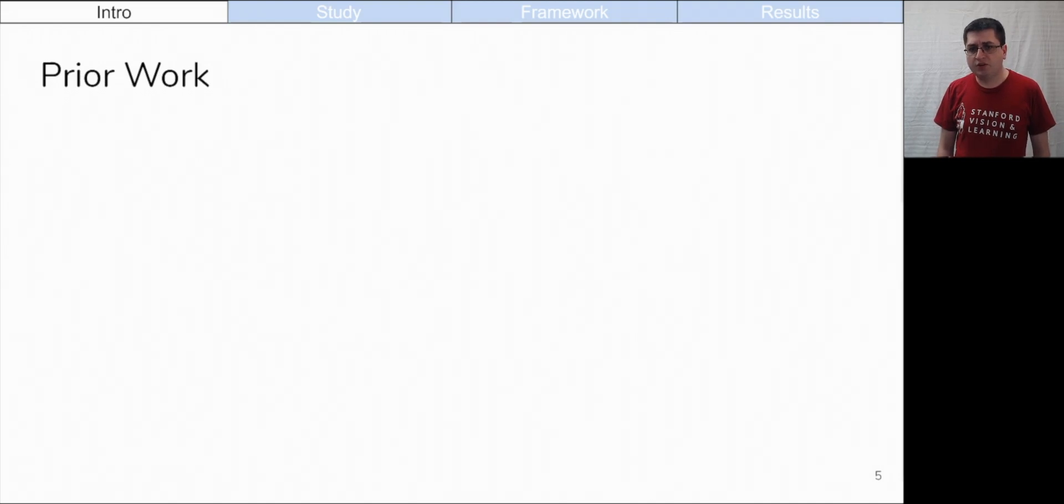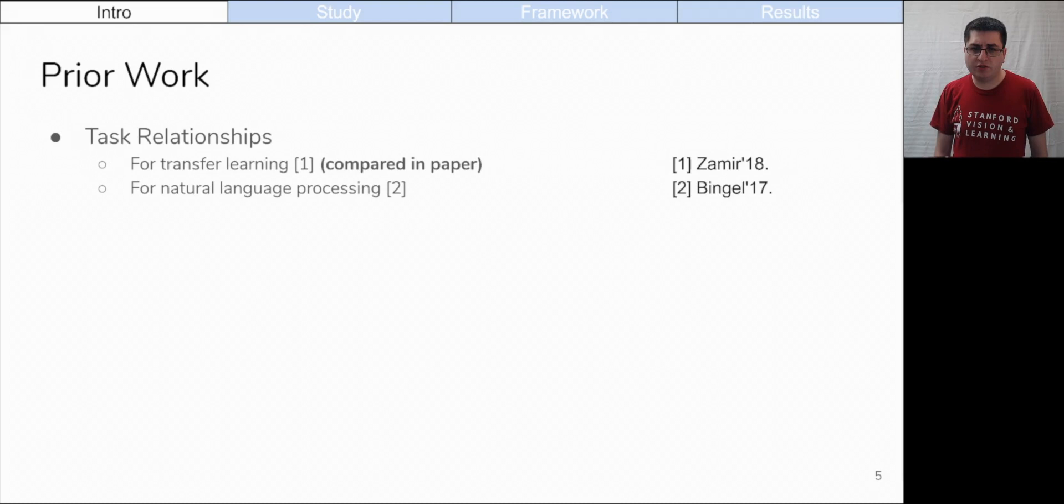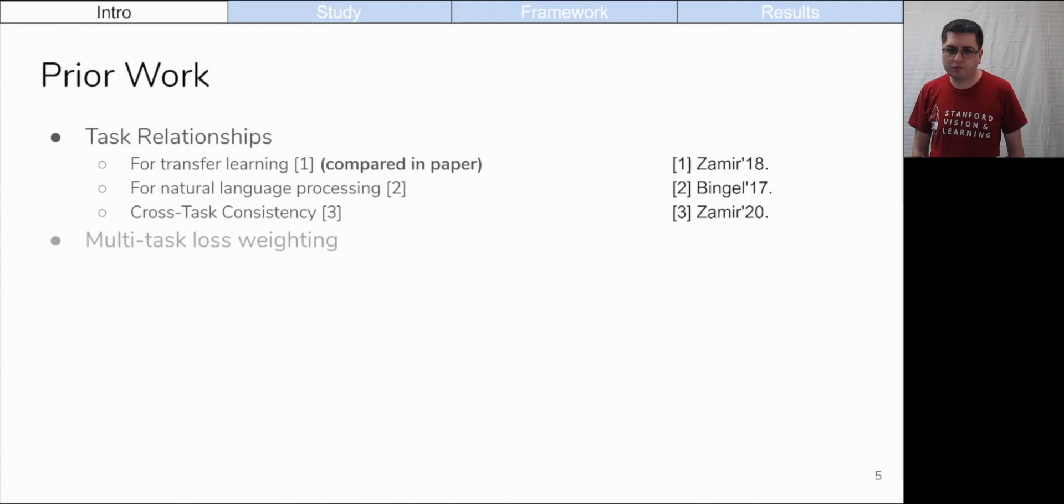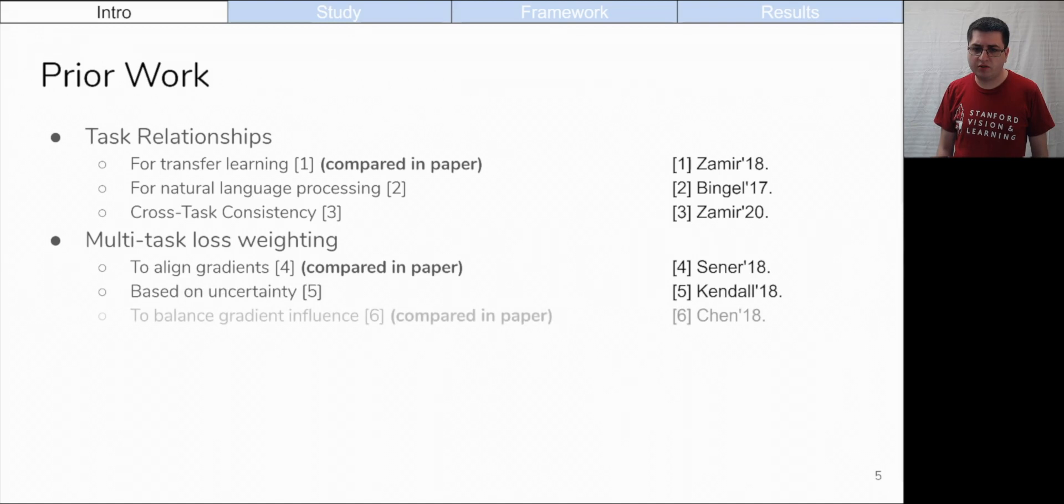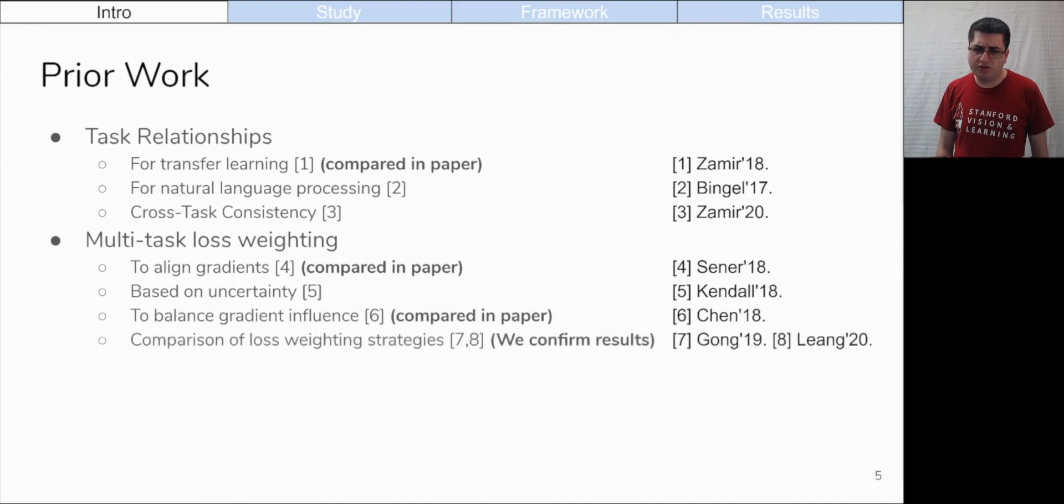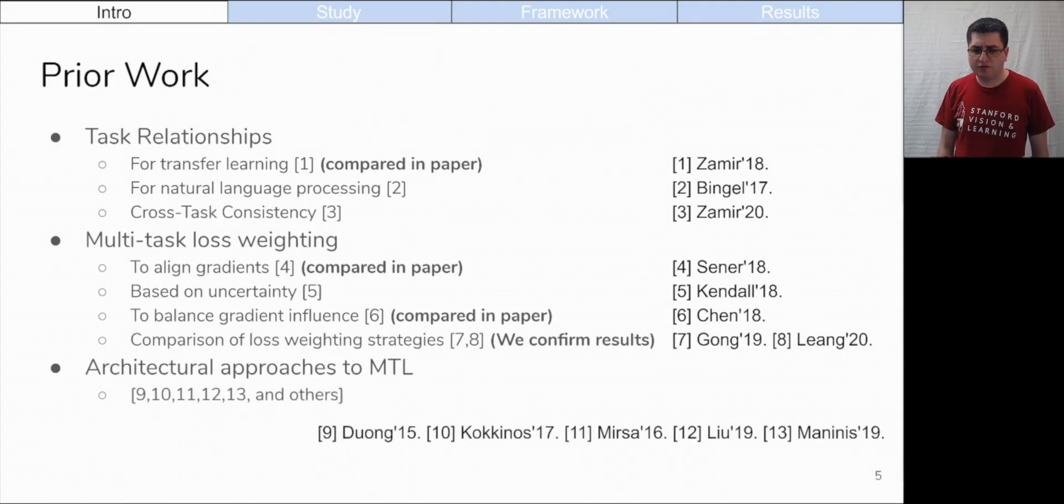There is extensive existing literature on multitask learning. Since our work analyzes task relationships, we are similar to taskonomy, which does so for transfer learning. A 2017 work analyzes task relationships for natural language processing. Cross-task consistency studies how making multiple task predictions consistent can improve the learning. Many works attempt to minimize negative transfer by carefully balancing the scale of each task's loss. One such work computes task weights that align network gradients. Another uses uncertainty to compute task weights. Gradnorm attempts to balance the influence of each task on network gradients. Lastly, two comparisons of task weighting strategies find no clear winner. They find that unit task weights often come out on top, which is what we observe. Finally, many works attempt to overcome negative transfer using architectural approaches.